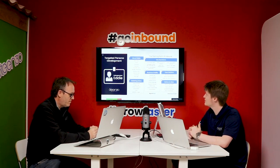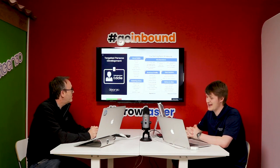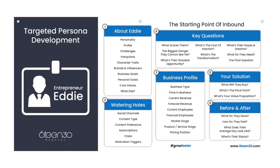Moving on to the next section of building a persona: Watering Holes. Watering holes are basically where your persona hangs out and where you can target and attract your best customers from — social channels, content type choices, preferences, subscriptions, what clubs they're a part of, and motivation triggers. Let's start with social channels.